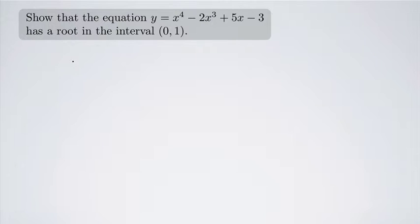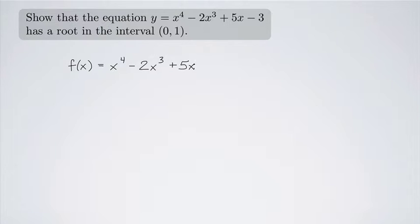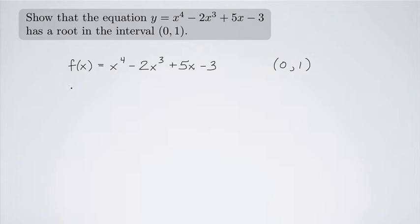So let's figure out how this is going to work. I have this equation, so I'm going to let f(x) equal x to the fourth minus 2x cubed plus 5x minus 3, on the interval 0 to 1. Now this is a polynomial, and polynomials are continuous everywhere. In particular, this polynomial is going to be continuous on the closed interval [0, 1].